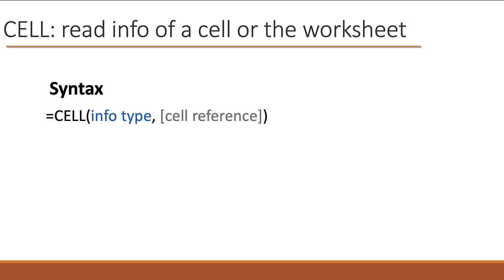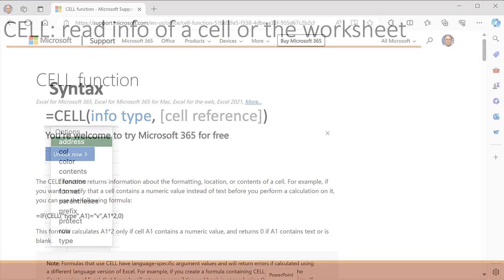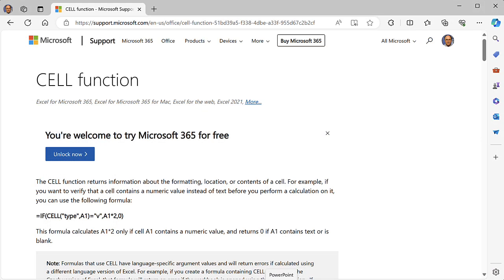What are the possible info types? Well, there's a whole bunch of these. For example, you could find the address — that is the row and column of a cell. Maybe you want to find just the column or just the row. Maybe you want to find the format. Maybe you want to know, are there parentheses in a formula in a particular cell? There are 11 of these info types. It's too much to explain each one in detail in this video, so you can go directly to Microsoft's website to get detailed explanations of each one.